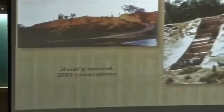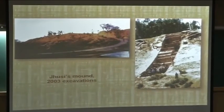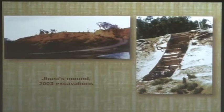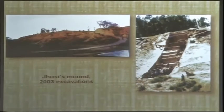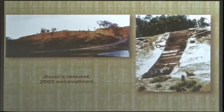Here are a couple of photos of excavations in 2003 at Jusi, a suburb of Allahabad. You can see the mound on the right, and how archaeologists excavate gradually into the mound to get a clear view of the stratigraphy — the oldest layers versus the uppermost layers. This is what is called the occupational deposit: what has accumulated through millennia of human occupation, going back all the way to Neolithic times in this case.